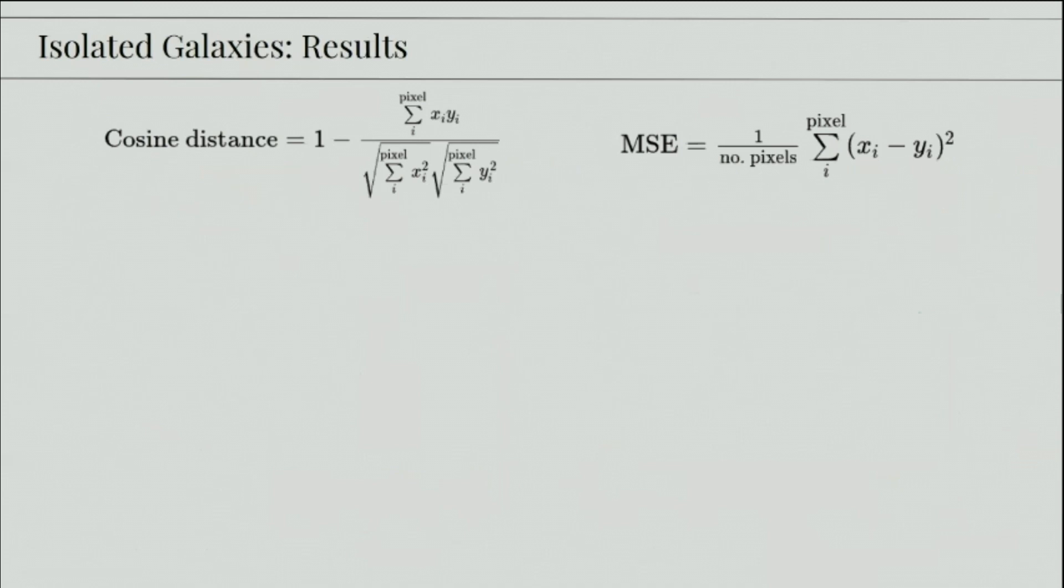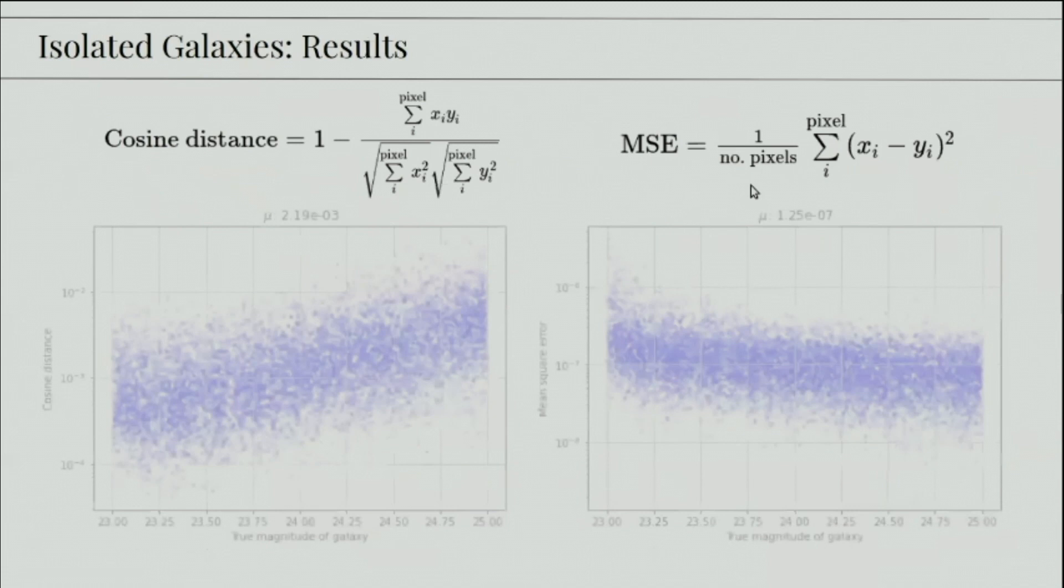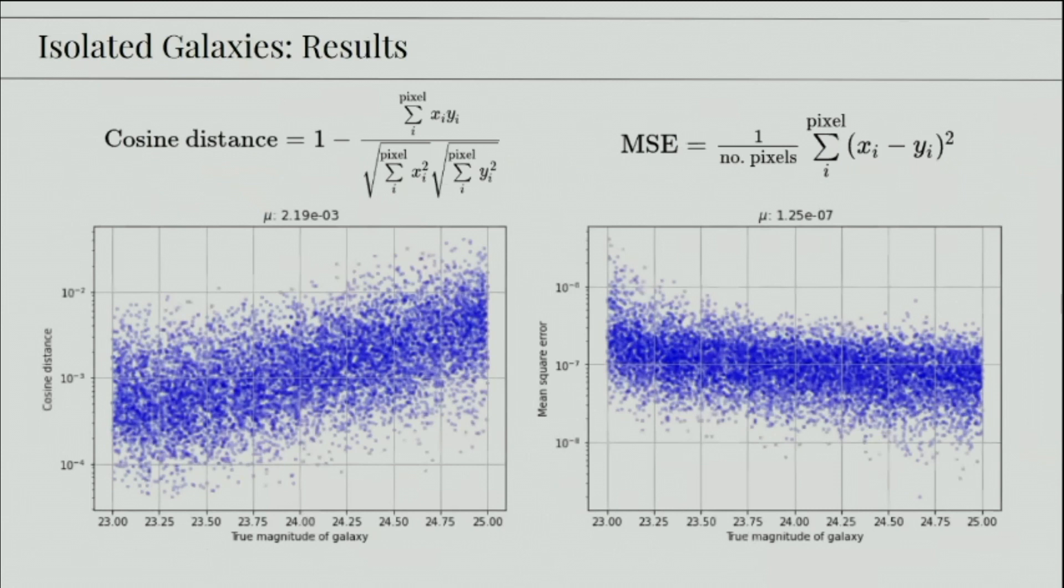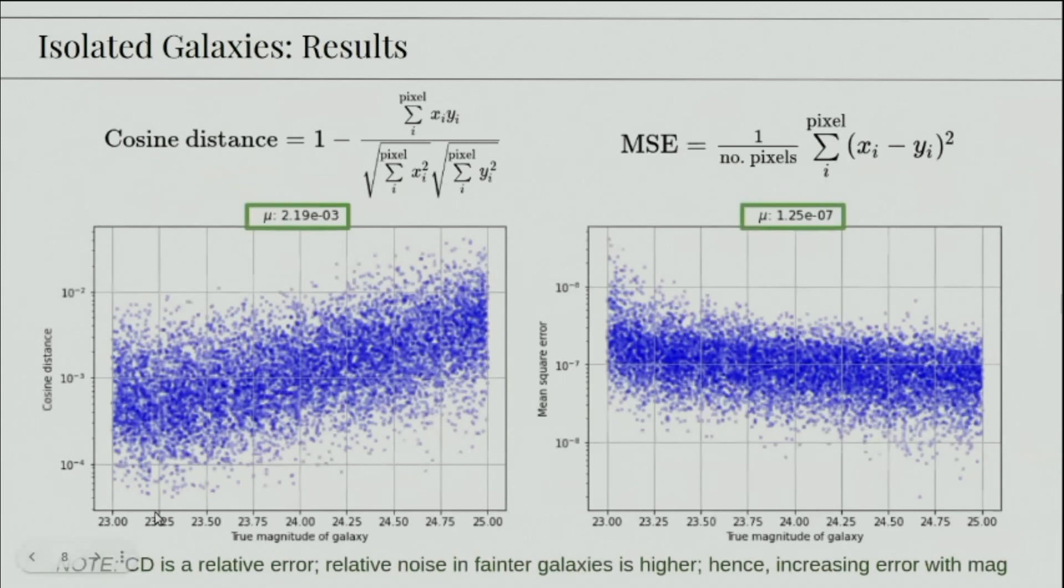We use some metrics to check the performance of our network, which include cosine distance and mean square error. And we can see that for the first network that works on isolated galaxies, both metrics tend to do well. So we plotted the metrics at the end of training for each of the galaxies, and we see that their orders are 10 to the power minus 7 and minus 3, so very close to zero as we would want.